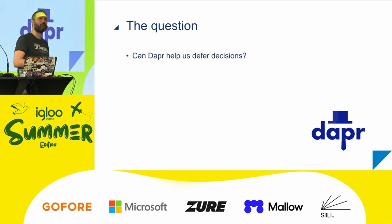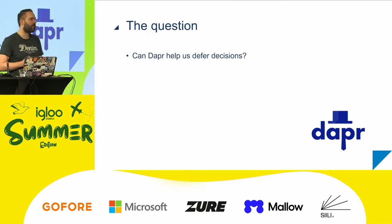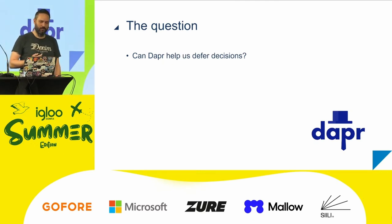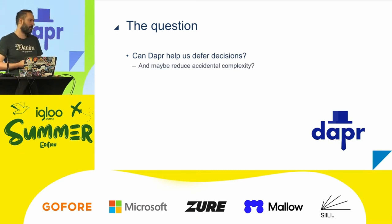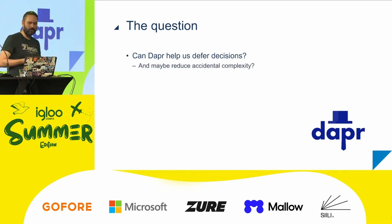So now we're going to tie it back to Dapr. Can Dapr help with this? And if we can do it, can we then reduce the accidental complexity?